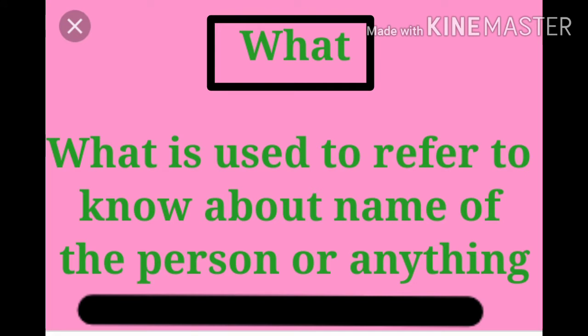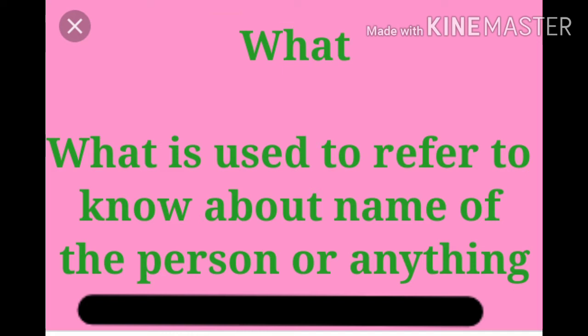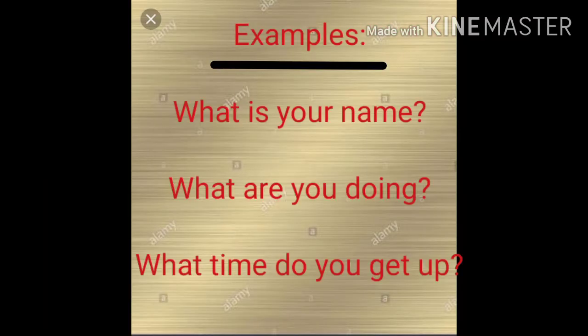The first one is WHAT. WHAT is used to refer to know about the name of a person or anything. If you want to know the name of a person or anything as an answer, we should use the word WHAT. For example: What is your name? What are you doing? What time do you get up? So here we use the word WHAT.